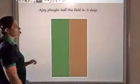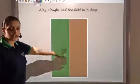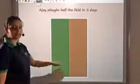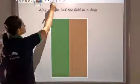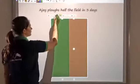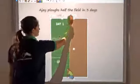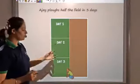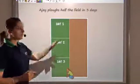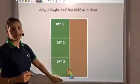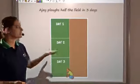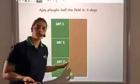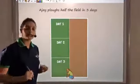Now let's visualize this. This is the entire field, and this is half the field which he has to do. In three days — day one, day two, day three — he completes this half field. And that's what we confirmed mathematically: Ajay plows half the field in three days.